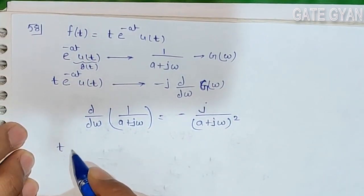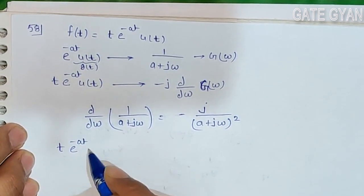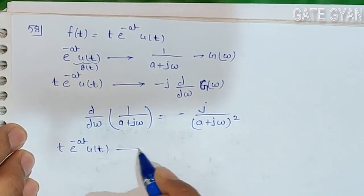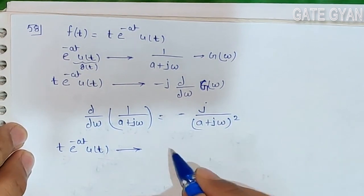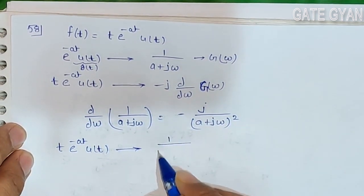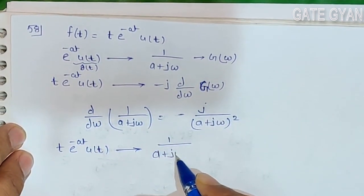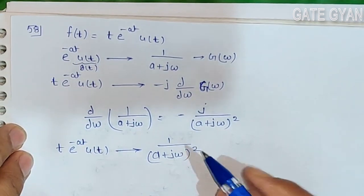The final answer for the Fourier transform of t·e^(-at)·u(t) is -j × (-j/(a + jω)²) = 1/(a + jω)². Substituting ω = 2πf,